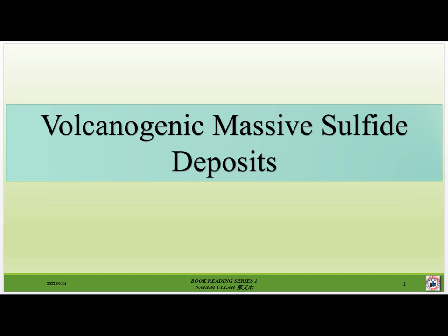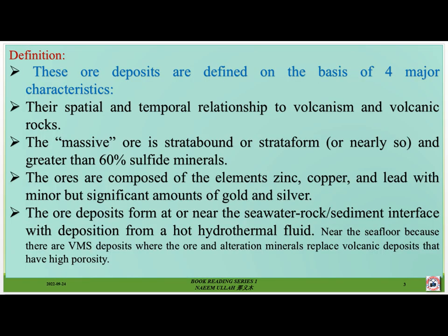Volcanogenic Massive Sulfide deposits. Definition: these deposits are defined on the basis of four major characteristics. Number one, there is a spatial and temporal relationship to volcanism and volcanic rocks. Number two, the massive ore is stratabound or stratiform, and contains greater than 60 percent sulfide minerals. Number three, the ores are composed of the elements zinc, copper, and lead, with minor but significant amounts of gold and silver.